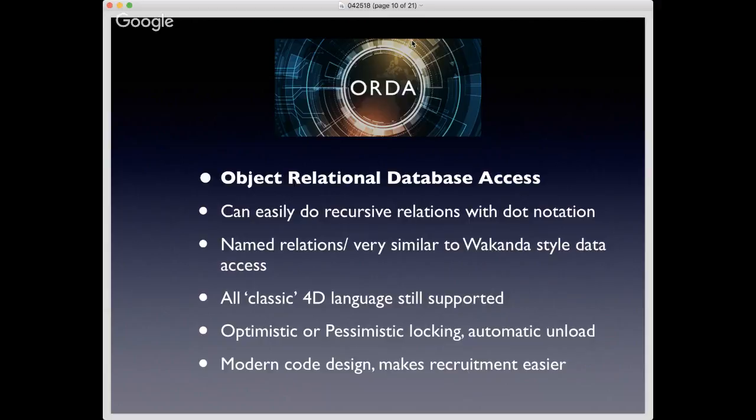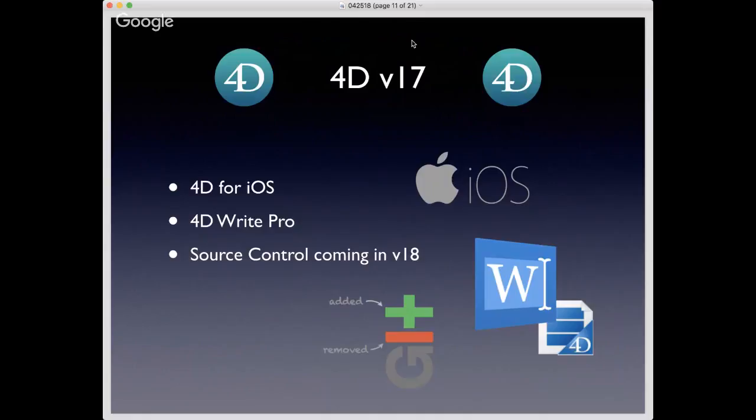That was not it. There were a couple of other big unveils at the summit: 4D for iOS, great new updates to 4D Write Pro, and in V18 they'll be rolling out source control, which will perhaps be integrated in a similar manner to Wakanda. They didn't say exactly if they'd be using Git, but why wouldn't you?